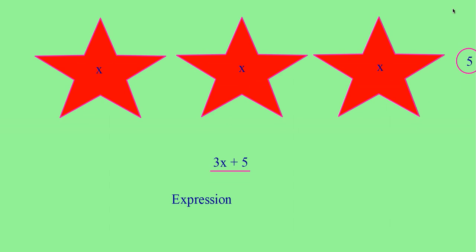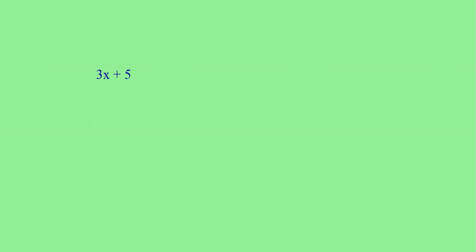That is, expressions are formed from variables and constants. Now, let us take 3x plus 5. 3x plus 5 is formed from 3x and 5. This 3x and 5, we can call it as terms. Therefore, the terms are 3x and 5. Now, the variable used in this expression is x. Here, 5 we can call it as constant.